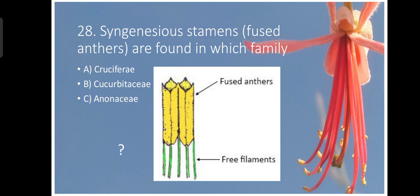Synginous stamens means fused anthers. But filaments are free, are found in which family. There is no option for Asteraceae. This condition is found in Asteraceae plants. So these all options are incorrect. You people may also comment for this.